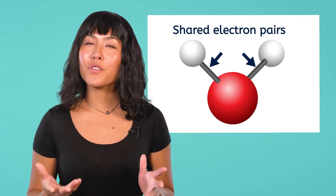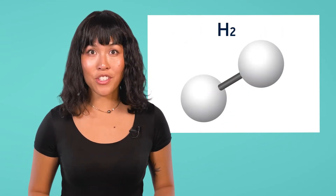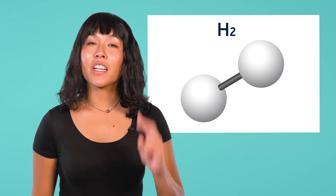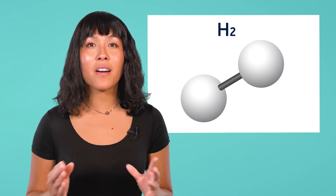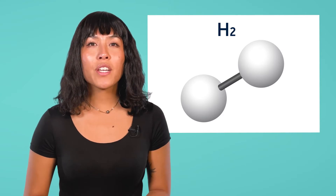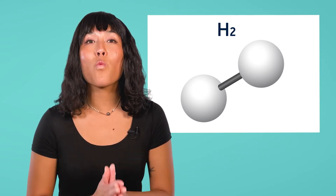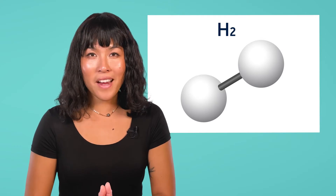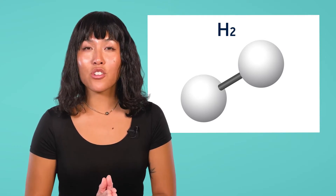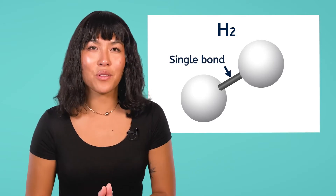Let's look at a few simple examples, starting with hydrogen gas, or H2. This molecule is made of two hydrogen atoms bonded together. Since there's just one stick in the model, we know that each hydrogen atom is participating in one shared electron pair. Because just one pair of electrons is shared between these atoms, it is called a single bond.